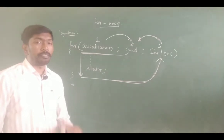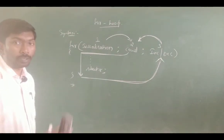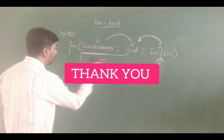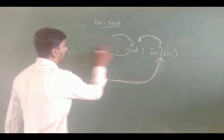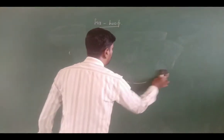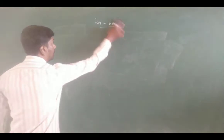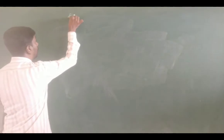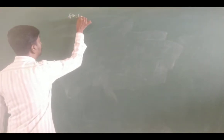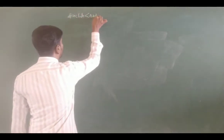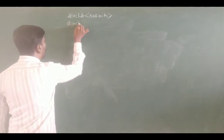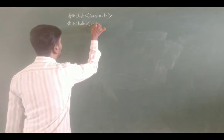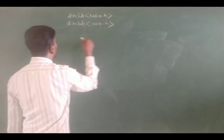Here we have a simple program — for example, print numbers from 1 to n. As usual we start with #include stdio.h. We can take the variables: integer n and integer i.